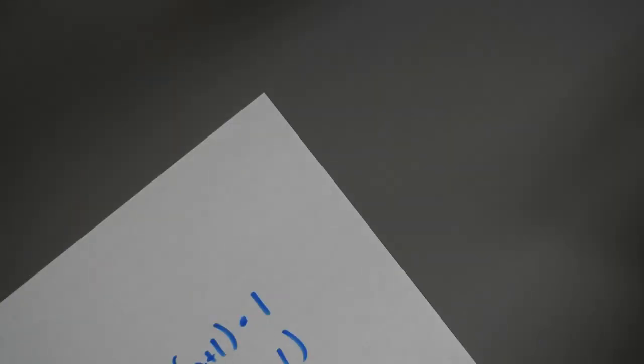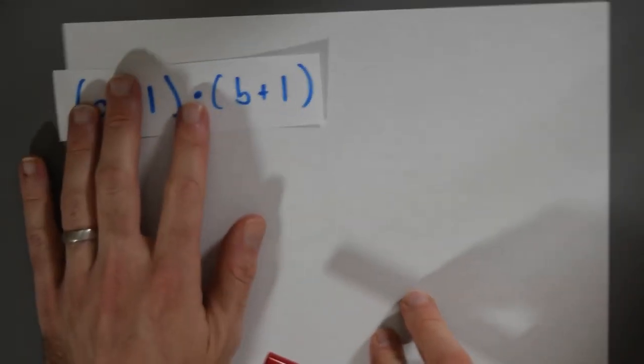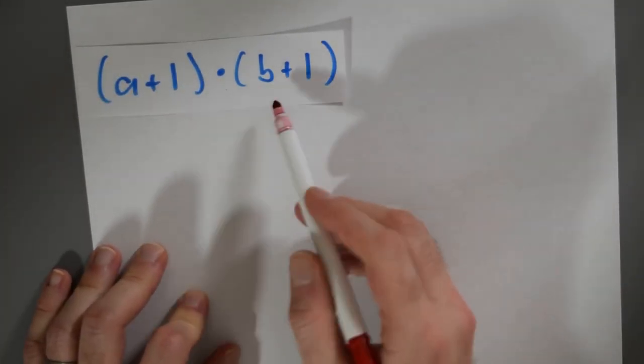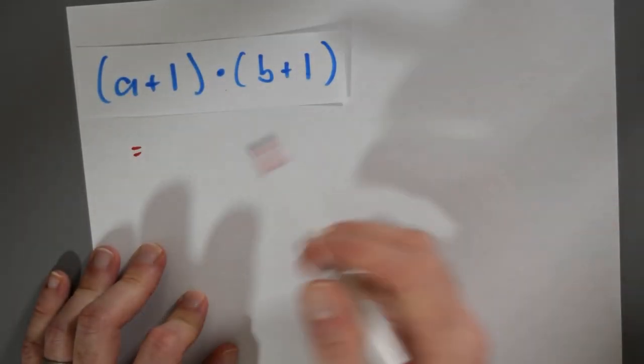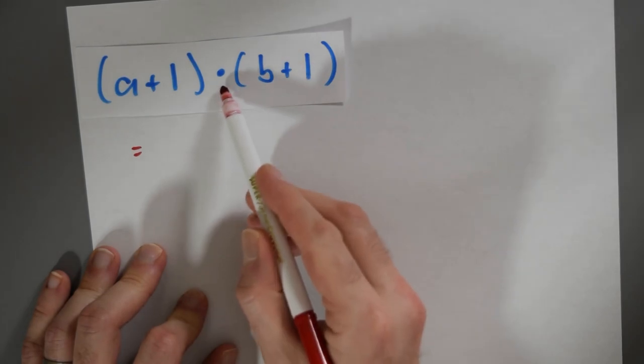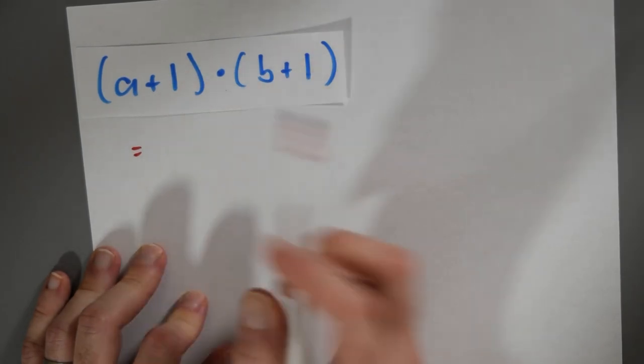Now let's expand (a+1)·(b+1) the other way. So I've got again (a+1)·(b+1), but now I'm going to think of this multiplication as distributing over this addition.